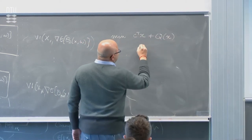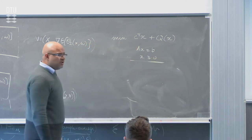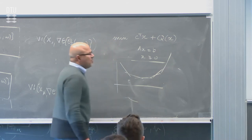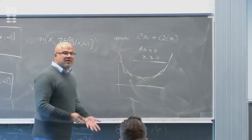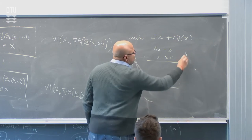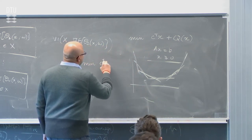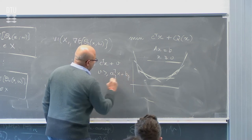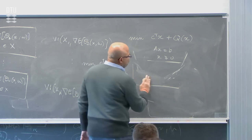Remember, I have a script Q(x), which is the recourse function. The way you solve this is the recourse function can be written — this function is basically a convex function, and there are a finite number of scenarios in the true problem. It's basically a piecewise linear convex function. The problem is that each of these cuts or edges requires you to solve an optimization problem.